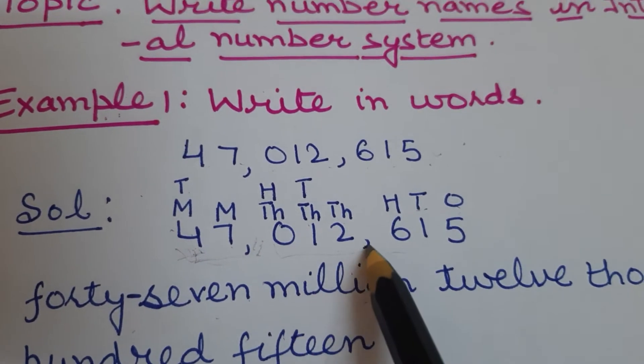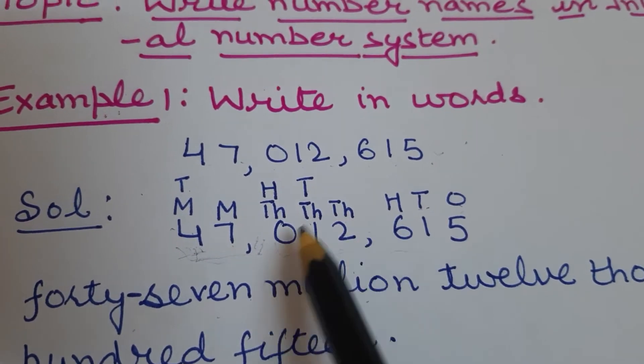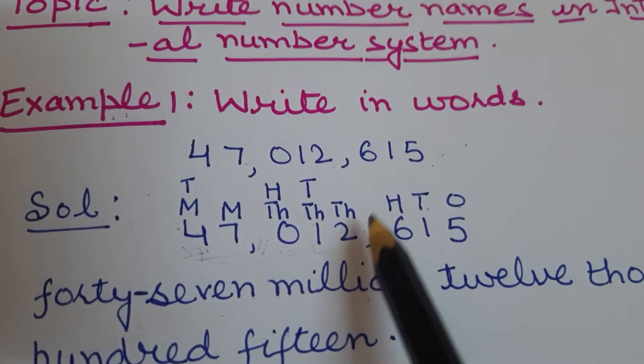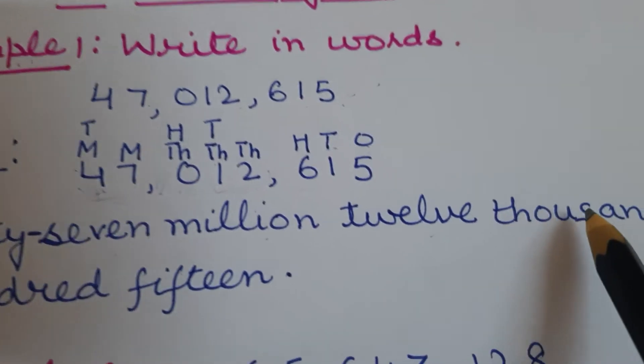Now come to next period, thousand period. What is given? Hundred thousand is 0, so what is given? Only 12. So 12 thousand.